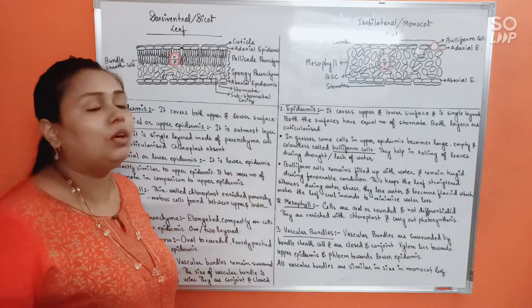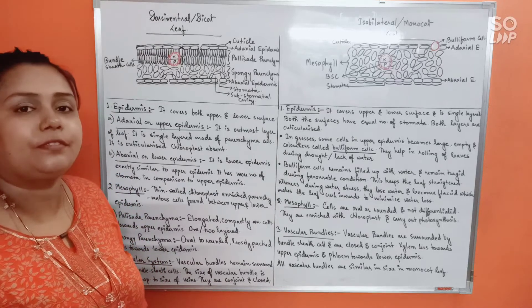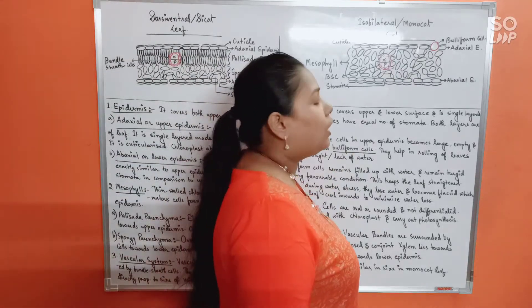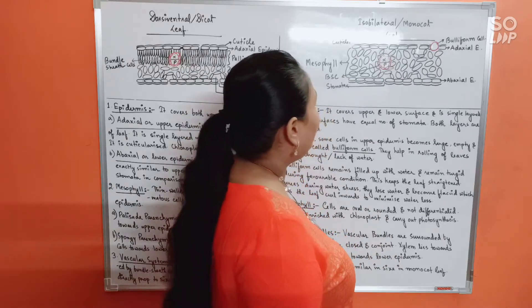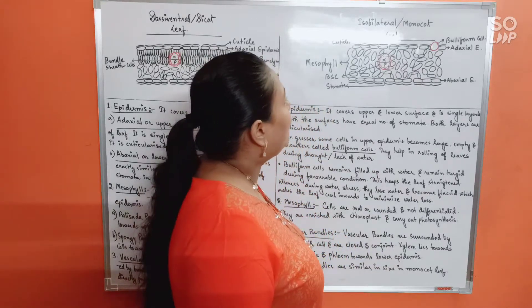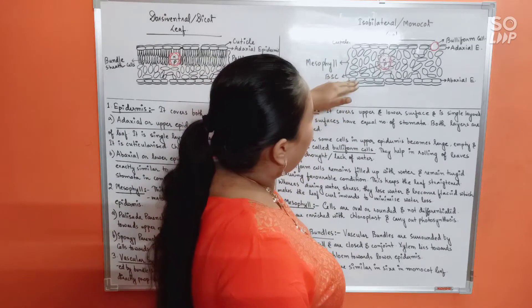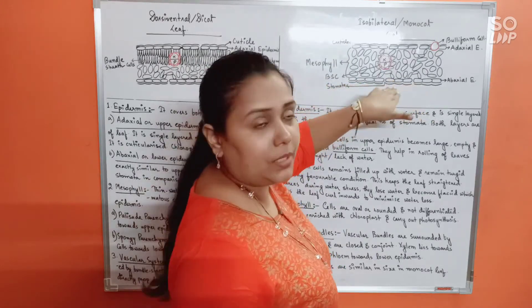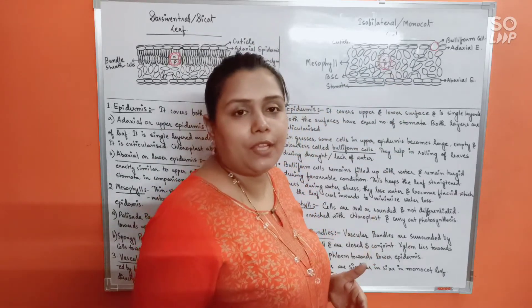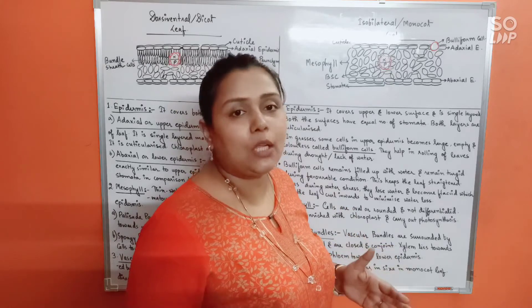Let's move on to isobilateral or monocot leaf. Looking at the diagram, it's much simpler. We have adaxial or upper epidermis and abaxial or lower epidermis. Because it's a monocot leaf, the upper and lower surfaces are not distinct — both are equal.